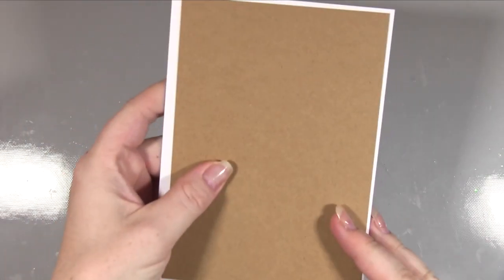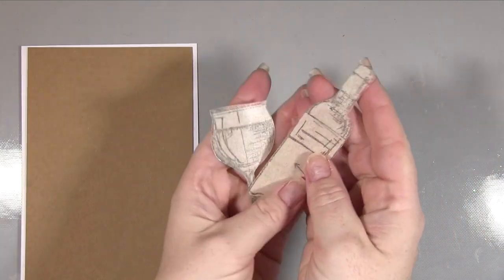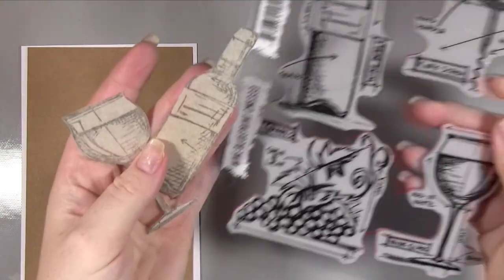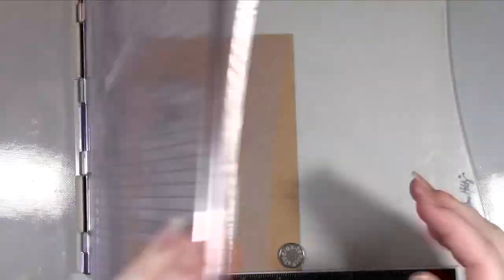I'm starting out with a white card base that is five by seven and then I cut a piece of craft card that's just a quarter of an inch down, so that's an eighth of an inch on each side. Then I stamped the bottle and the glass from the stamp set onto masking sheets and cut those out.